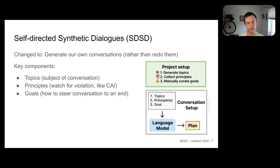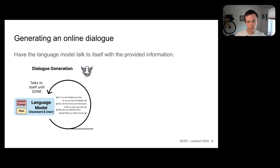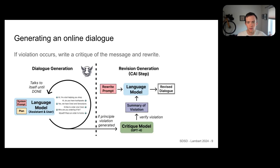The setup phase is: we collect these topics, principles, and goals, then pass them into the open language model, which generates a plan — a written document like 'you're going to have this conversation, follow steps one through four, and then talk to yourself to get to the end.' Once you have this plan, there's a feedback loop where the language model talks to itself. It has the system prompt — which is the plan — and if it violates any of its principles, it writes a special sequence of tokens. This works for most of our data; we didn't have to do that much cleaning.